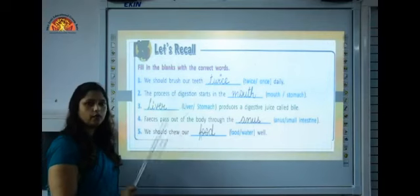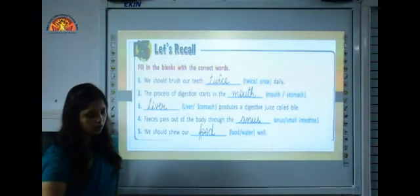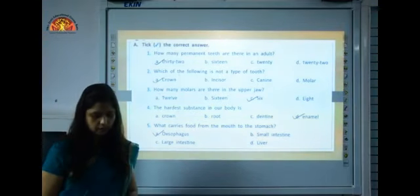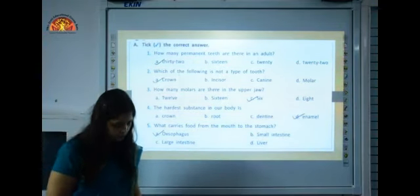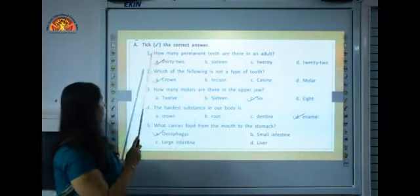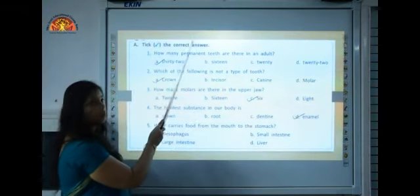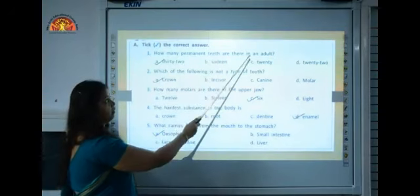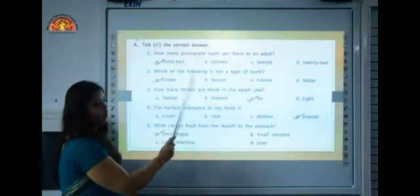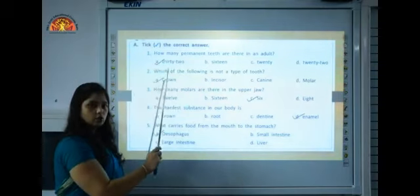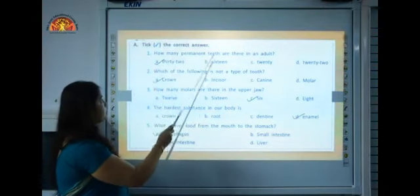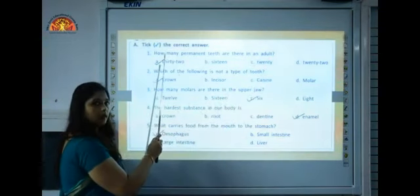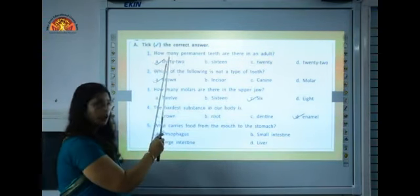Now let's move to the next exercise. It is on page number 20. Exercise number A: Tick the correct answers. How many permanent teeth are there in an adult? Here four options are given. You have to put a tick mark on the correct option: 32, 16, 20, 22. So 32 is the correct answer. Put a tick mark over 32.